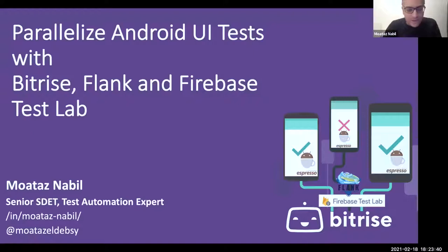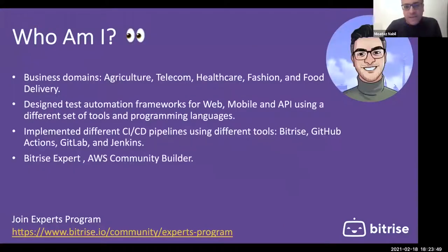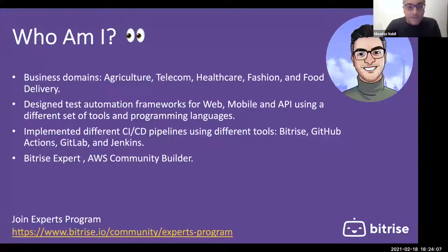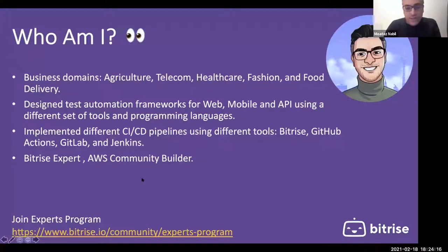Motaz introduces himself: currently working as a Senior Software Engineer in Test at Delivery Hero in Berlin, Germany. He has worked across agriculture, telecom, healthcare, fashion, and food delivery domains, with various test frameworks for web, mobile, and API. He has used CI/CD pipelines including Bitrise, GitHub Actions, GitLab, and Jenkins, and is a Bitrise Expert and AWS Community Builder.